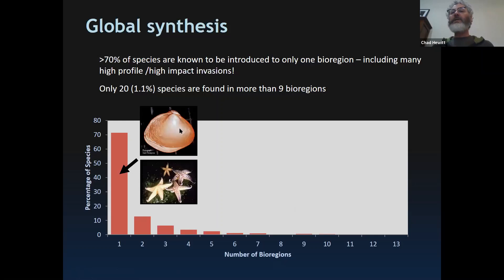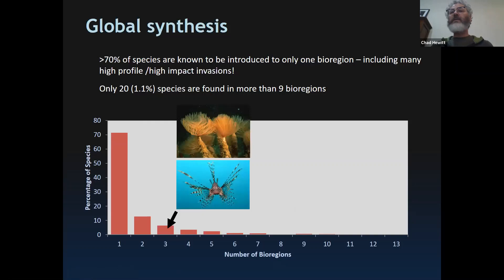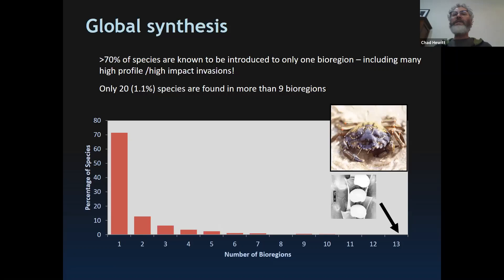Some high-profile species like the Asian clam Potamocorbula amurensis in San Francisco Bay and the Northern Pacific sea star Asterias amurensis have only been introduced into one location. The Mediterranean fan worm Sabella spallanzani has been introduced into several regions, and the lionfish Pterois volitans into five bioregions. Only about 1.1% of total introductions are found in more than nine bioregions. Two species — Carcinus maenas, the European shore crab, and Bugula neritina, a bryozoan — have characteristics of super invaders.